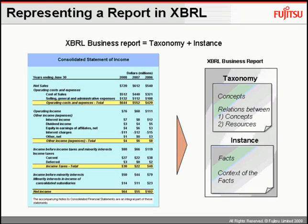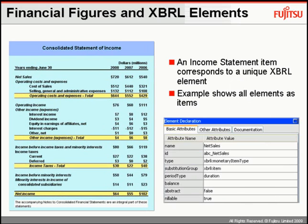Note that the instance document just contains the concept values and not how to relate them. The relationships between concepts and how to define them are in the taxonomy. Representing data in XBRL means that all the information currently in your financials can be classified and represented in XBRL. Each unique financial concept or fact in a financial report is represented by a unique element in the XBRL taxonomy. This single financial fact is called an item — for example, in this income statement, all the financial facts are items.